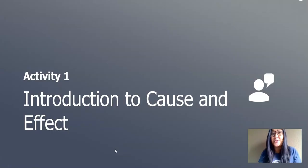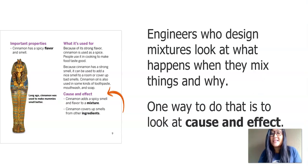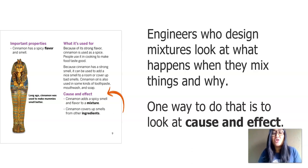Here's our first activity. We will be introduced to cause and effect. When one thing causes another thing to happen, that's cause and effect — the first thing that causes it, and the result is the effect. Engineers who design mixtures look at what happens when they mix things and why, and one way to do that is to look at cause and effect.